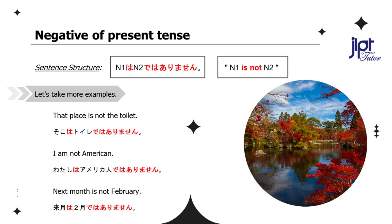Next month is not February: Raigetsu wa nigatsu de wa arimasen.